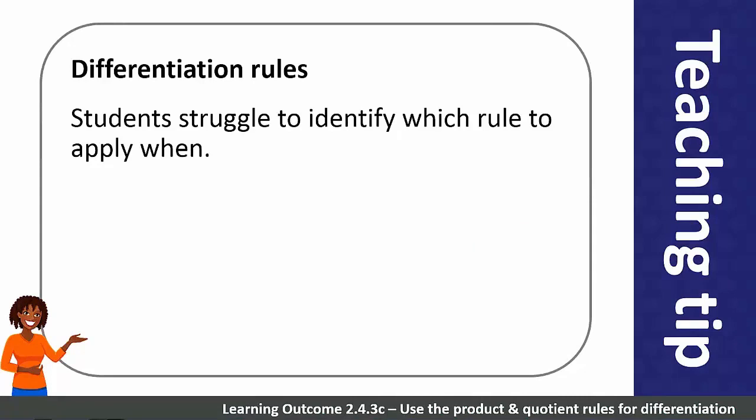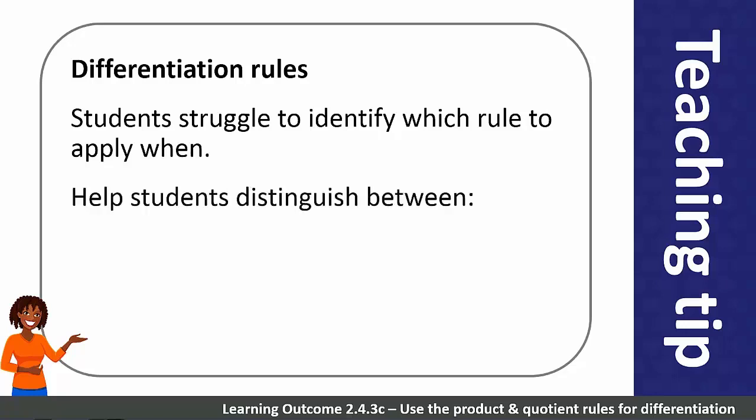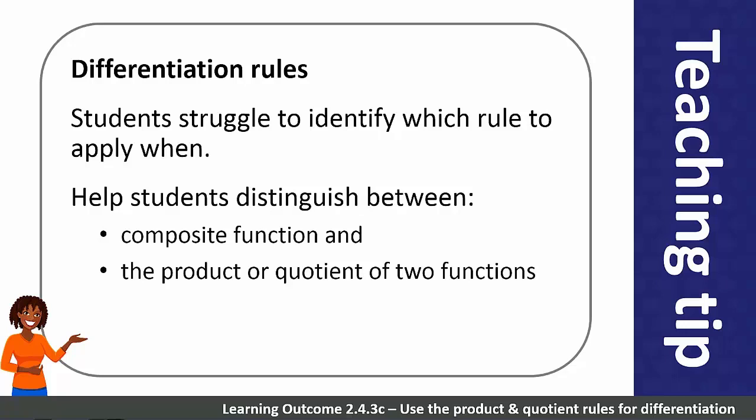In the last few years, examination papers have not expected students to decide which rule to apply — it has been given to them. However, students will have a better understanding if they know which rule should be applied. In particular, they need to distinguish between a composite function and the product or quotient of two functions, so they know whether to apply the chain rule or the product/quotient rules.